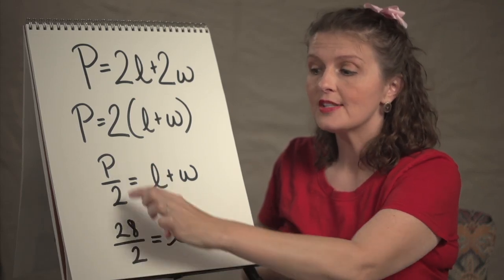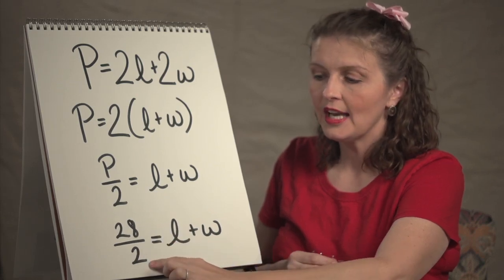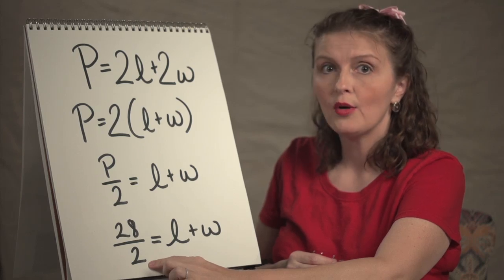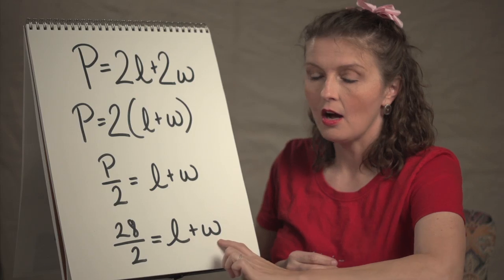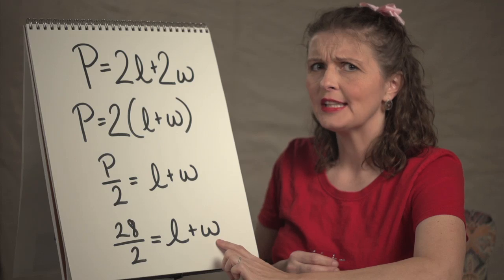And for us, our perimeter was 28. So if we take 28 divided by 2, which is 14, we know that 14 is the sum of the two sides, the length and width. So let's look at these.